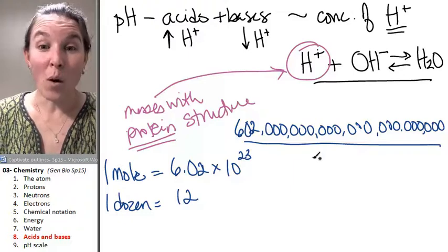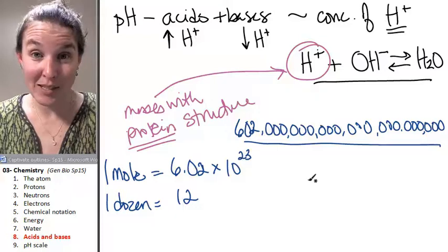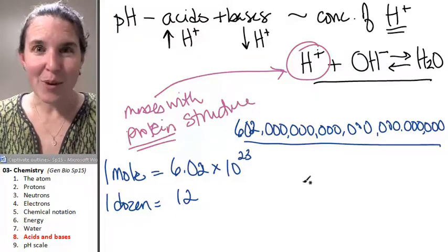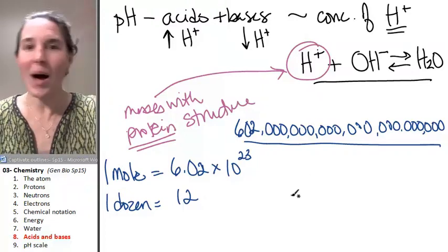A mole, one mole of hydrogen ions is one gram, which is basically a paperclip. That alone should tell you, atoms are so small. Why do we care?